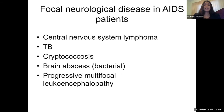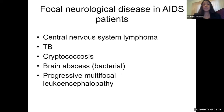In addition to toxoplasmosis, consider the following other entities for focal neurologic disease in AIDS patients: primary CNS lymphoma, tuberculosis, cryptococcosis, bacterial brain abscess, and progressive multifocal leukoencephalopathy — though PML is more white matter disease.